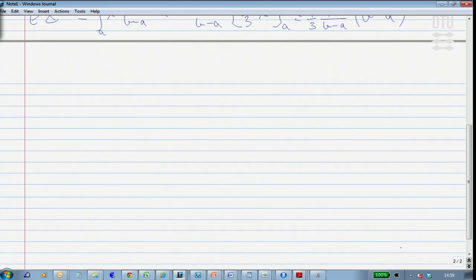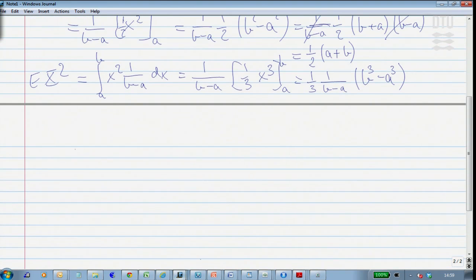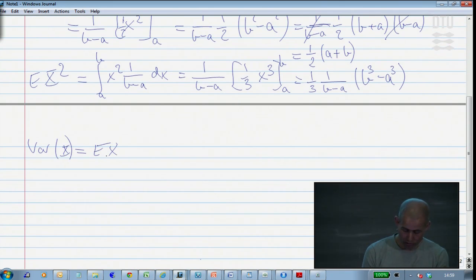Then I find the variance using the usual formula, where we find the variance as the mean of the square of x minus the square of the mean of x.